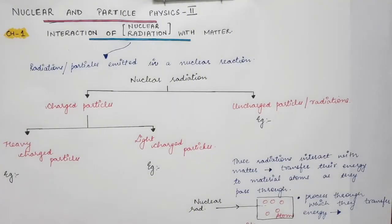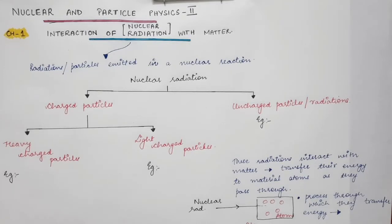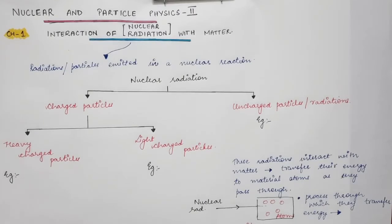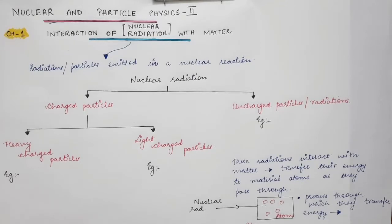This is the first lecture of Nuclear and Particle Physics Part 2. In the previous series, Part 1, we discussed about the nucleus — its various properties, its components, and the various types of particles emitted from a nucleus, for example the alpha particle, the beta particle, and the gamma radiations. After that, we had a look at nuclear reactions.